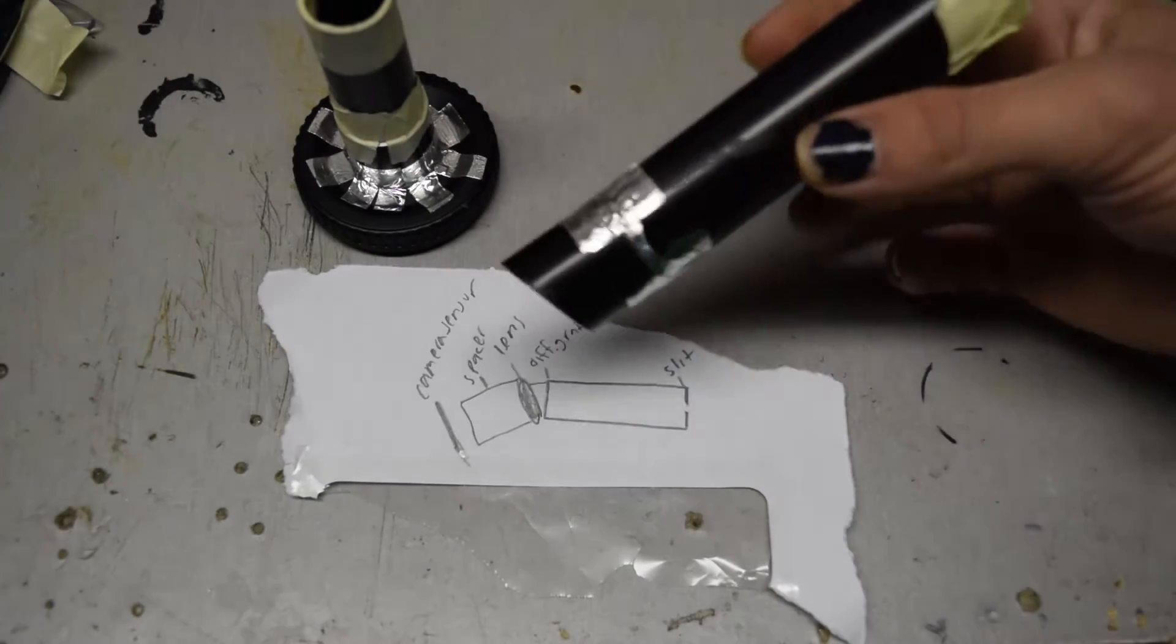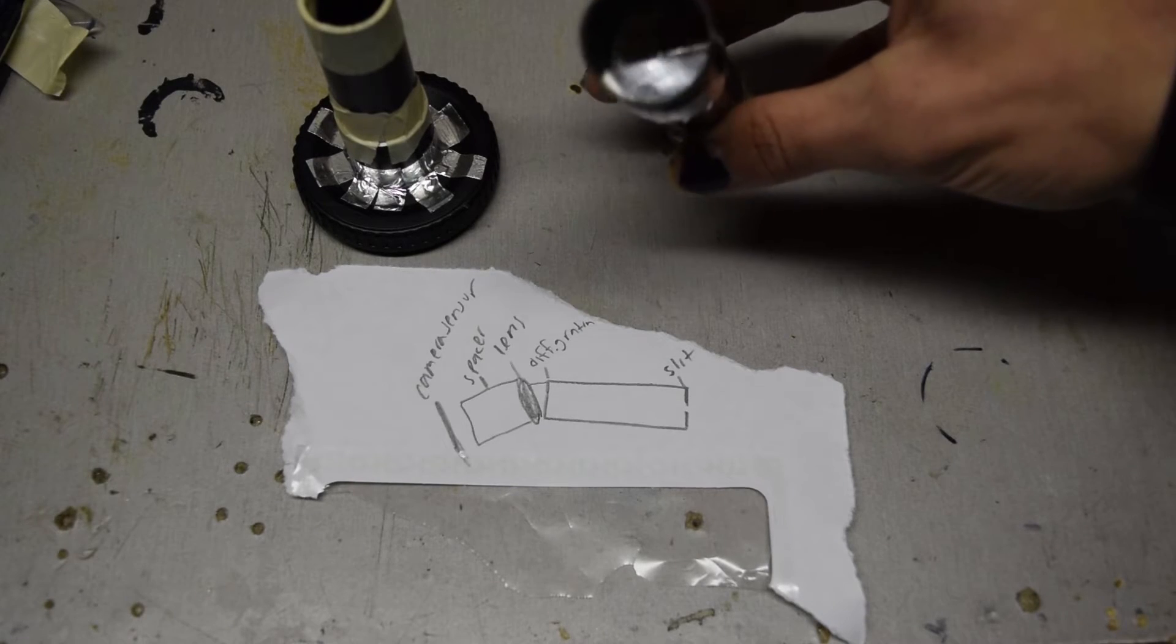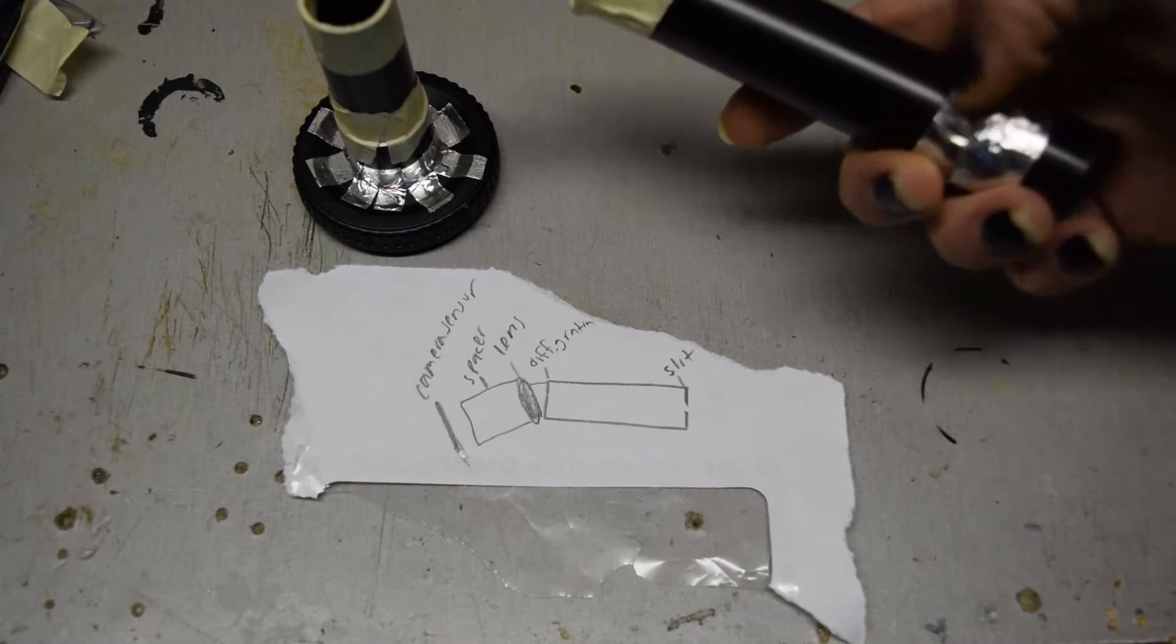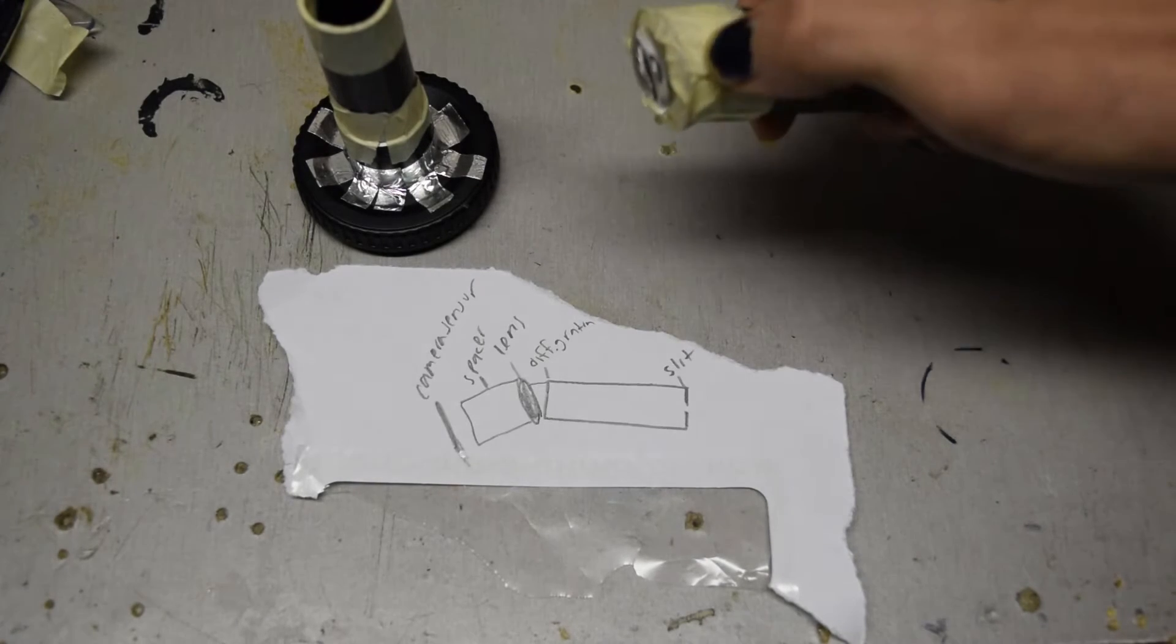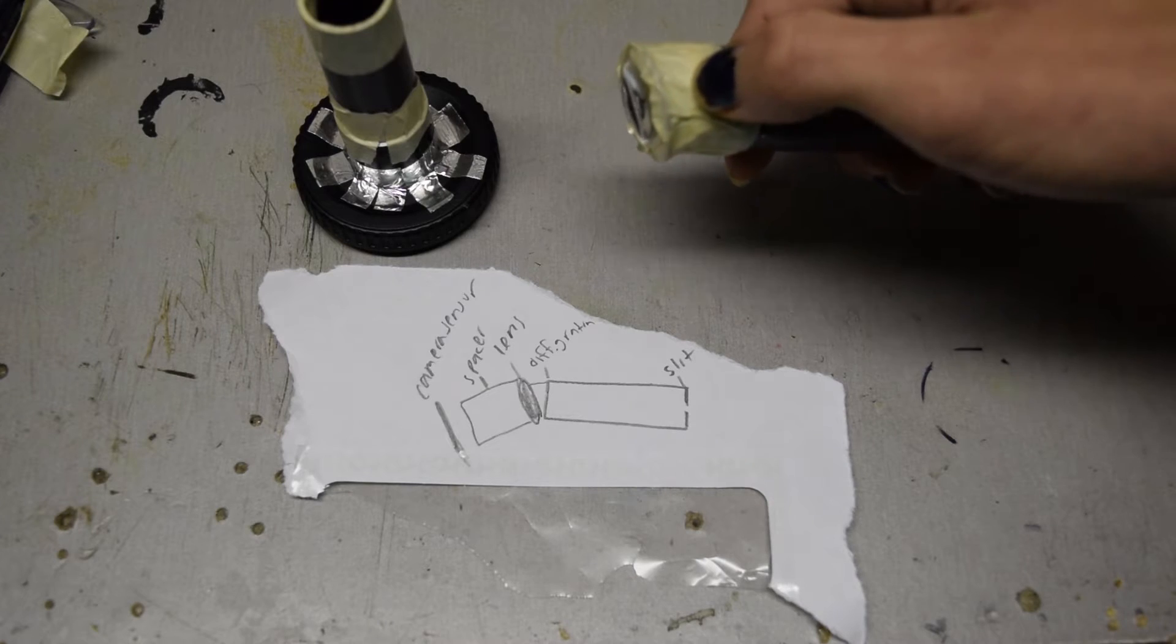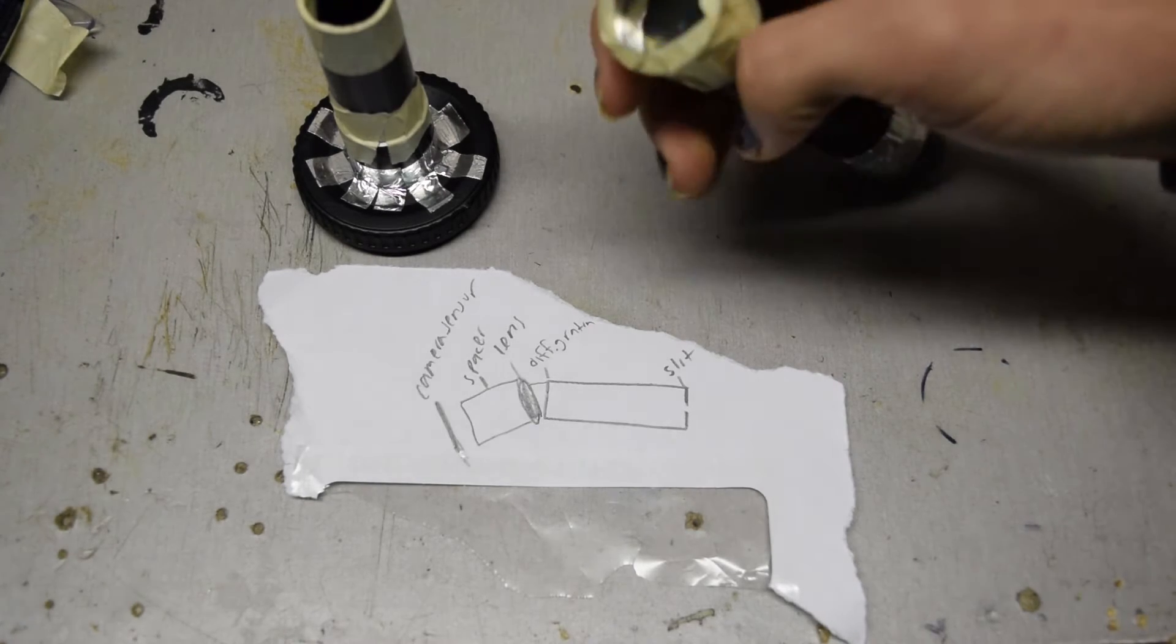So the design is actually really similar to the last one. There's a slit in there which is kind of visible, and then there's a length of empty tubing. Then there's a diffraction grating which is mounted parallel to the slit, and then there's a lens which is covering the diffraction grating.